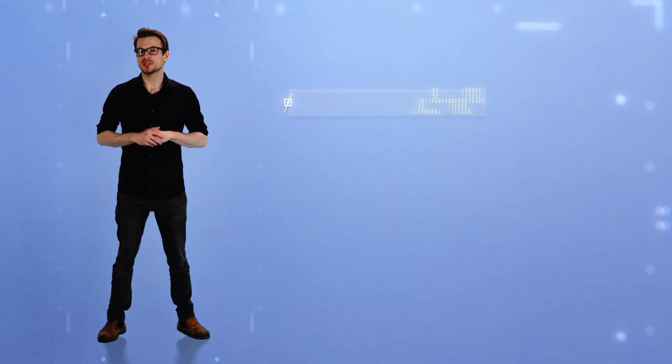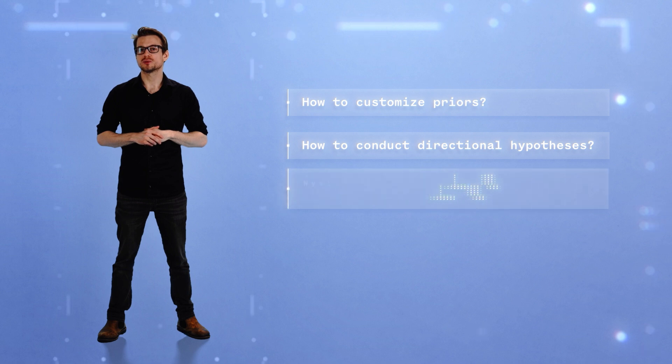This video was an introduction to a Bayesian t-test. The link to the dataset and the R script can be found in the description of the video, along with further readings discussing how to customize priors, how to test directional hypotheses, and the pros and cons of using this approach in comparison with frequentist statistics.